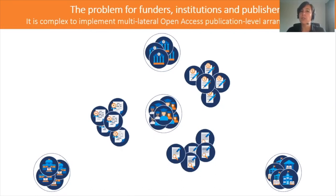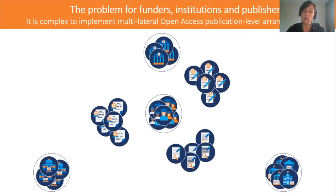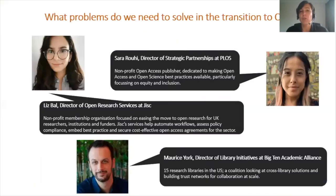What is the challenge around these multilateral open access publication-level arrangements for all three stakeholders — funders, institutions, and publishers? It's very complex and administratively heavy. There are multiple authors, institutional affiliations, and funder arrangements, but also a myriad of systems and processes with all these stakeholders involved. Everybody has their own way of working, and the operational relationships and communication going on make it very complicated and messy.